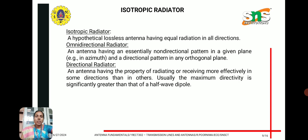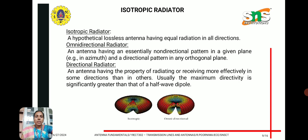An omnidirectional radiator is an antenna having an essentially non-directional pattern in a given plane and a directional pattern in any orthogonal plane. A directional radiator is an antenna having the property of radiating effectively in some directions more than others. Usually, the maximum directivity is greater than that of a half-wave dipole. This is shown in the radiation pattern of isotropic and omnidirectional antennas.